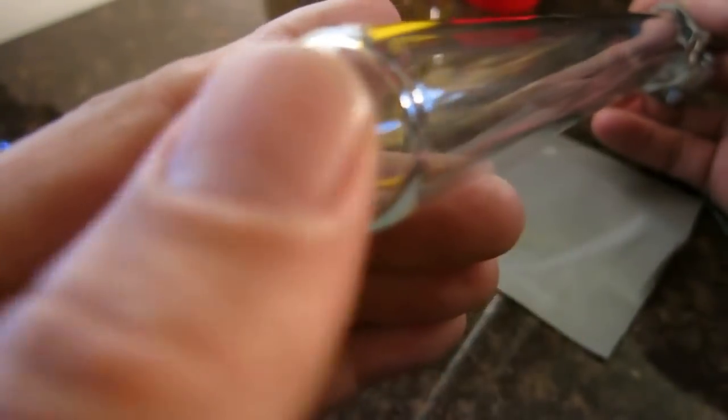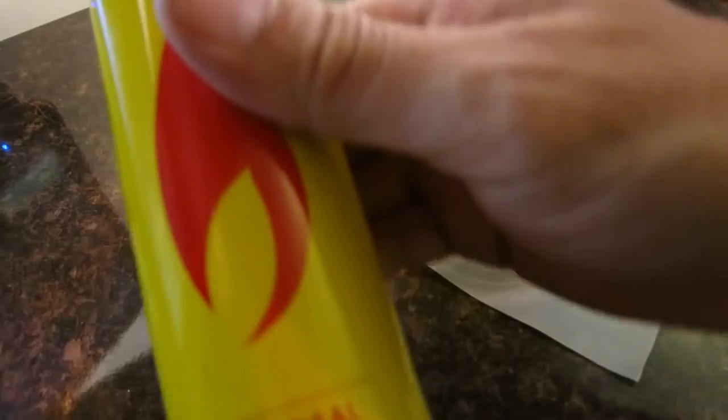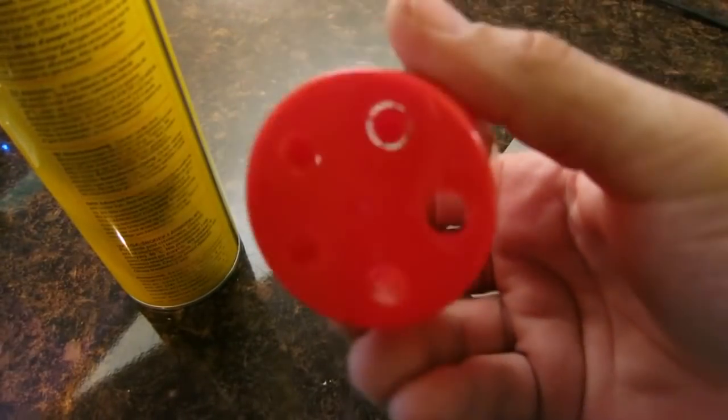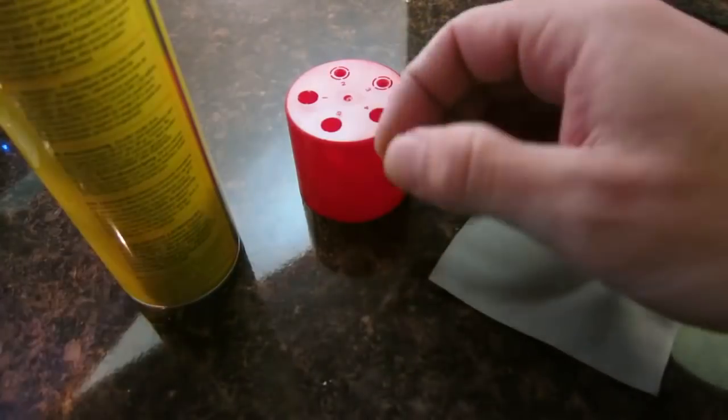All these are hand-blown glass so all the holes are gonna be a little bit different. Here's your can of butane. On the cap there's a bunch of holes or tops that fit. What you're gonna do is pop one out just like this.